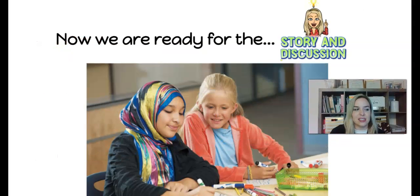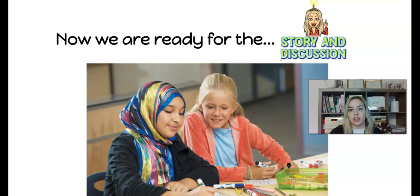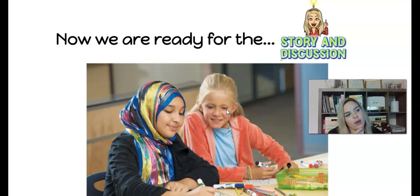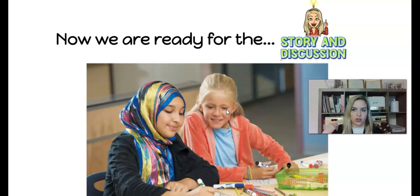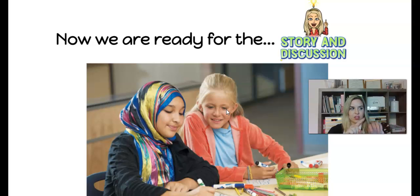Now we're ready for the story and discussion. Let's learn about two students who find something they have in common and learn to accept their differences. Here are Yasaman and Olivia. Yasaman recently joined Olivia's third grade class. I want you to look at this photo and think about ways that Olivia and Yasaman appear different. If you think they're different because of their clothing, touch your clothes. If you think they're different because of their ethnicity — their skin tone or possibly where they're from — touch your skin. Yasaman comes from Iran. She wears different clothing from Olivia, and English is not her first language.